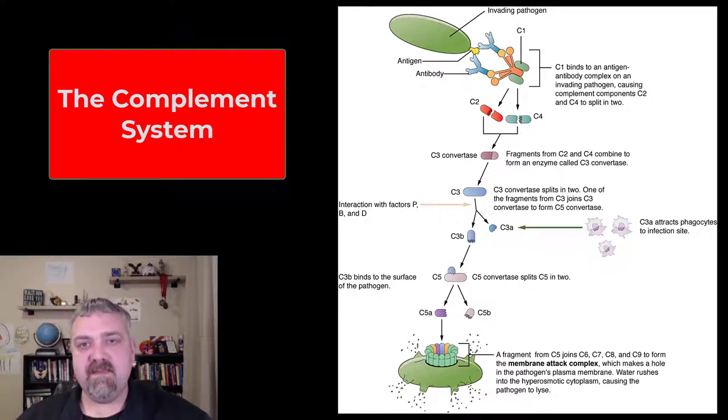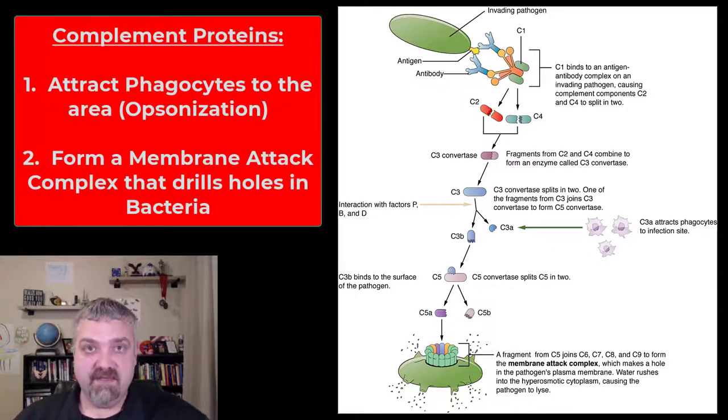So there are two different types of complement systems, but before we get there, they're a series of proteins. They're proteins found in your blood plasma, they're made in the liver, and there are two different pathways.